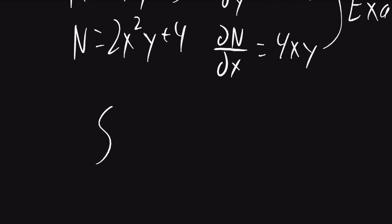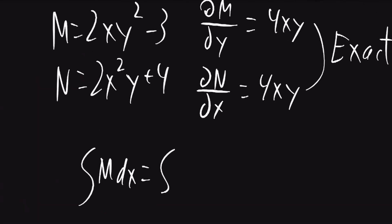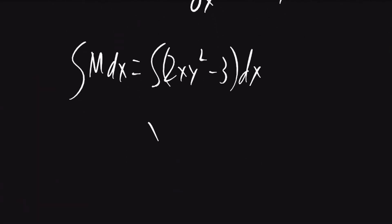We can now take the integral of m with respect to x, which is going to be the integral of 2xy squared minus 3 dx. This will evaluate to x squared y squared minus 3x plus g of y. This is our function.